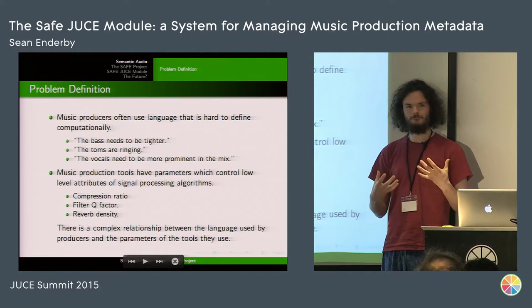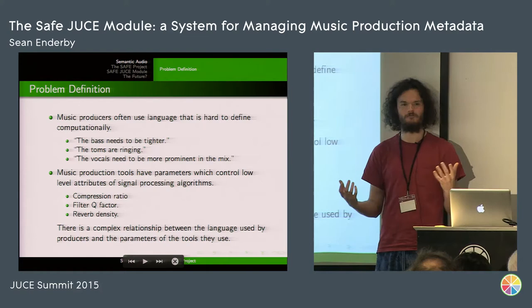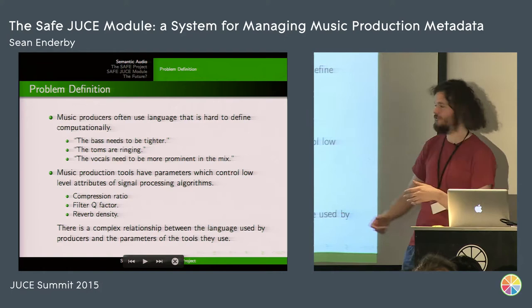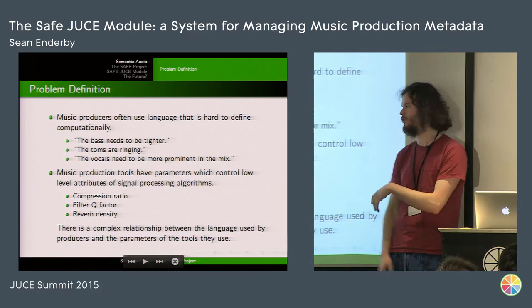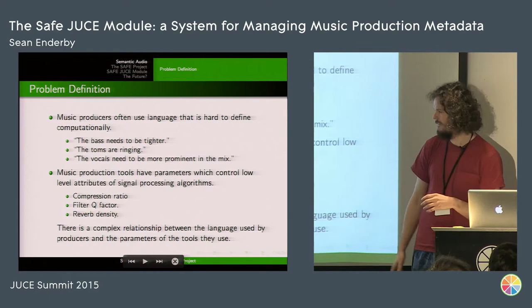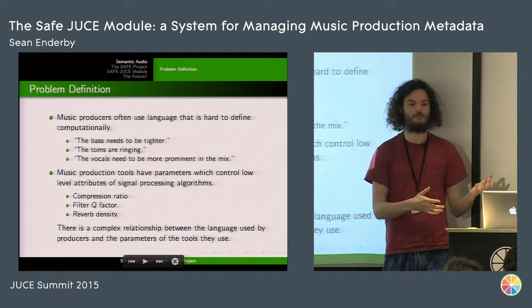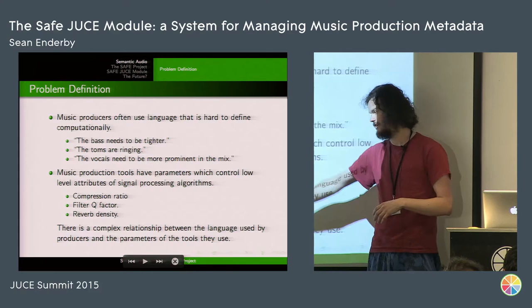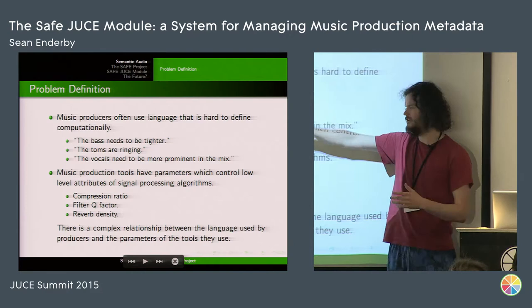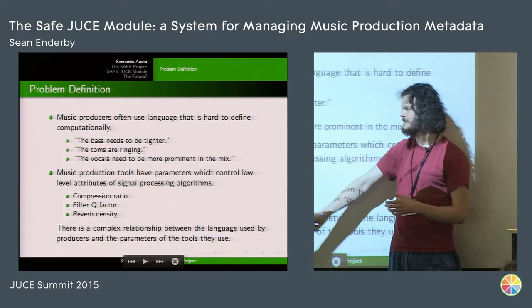We're looking at this problem of the language of music production. Lots of people are producers or have talked to producers, and there is this language you use when talking about how to make audio — so the bass needs to be tighter, the vocals need to be more prominent. On the other side, the tools you use to achieve these effects have these low-level parameters, like a ratio on a compressor or a density knob on a reverb. And there are complex relationships between these parameters and the end results.